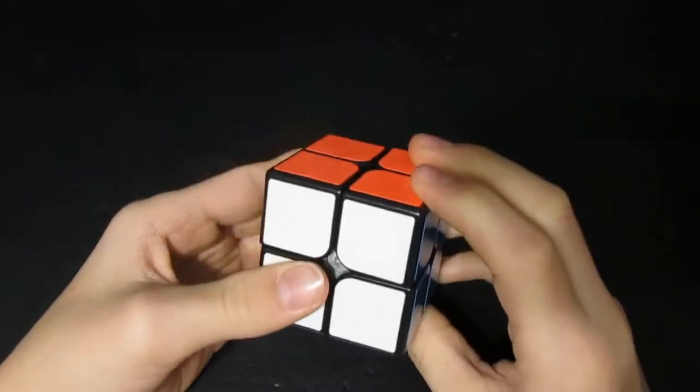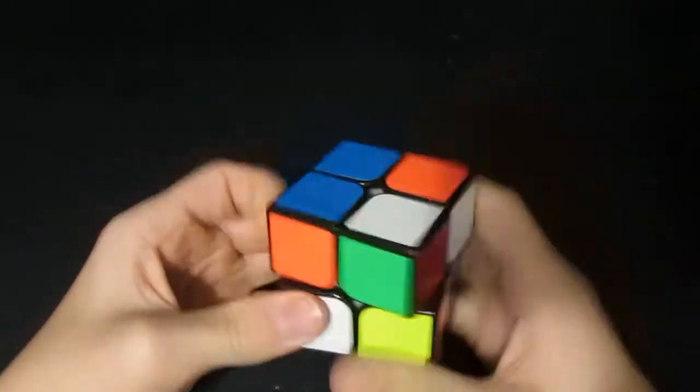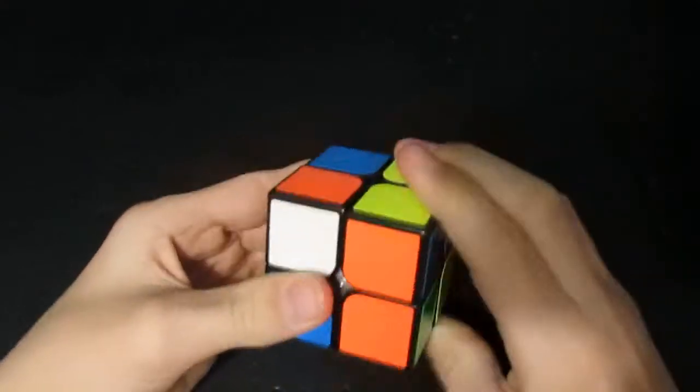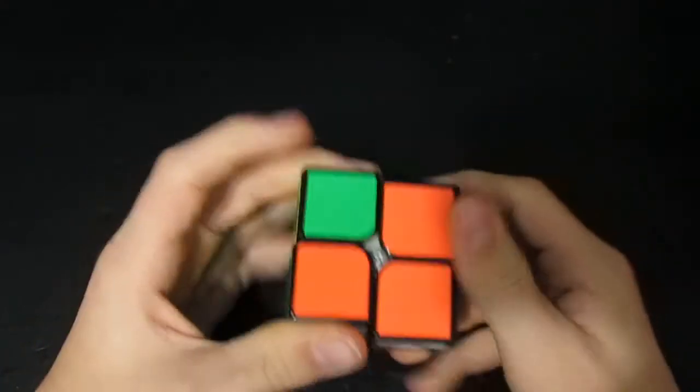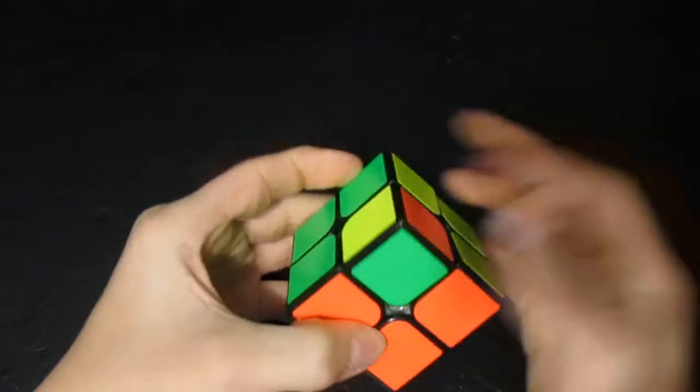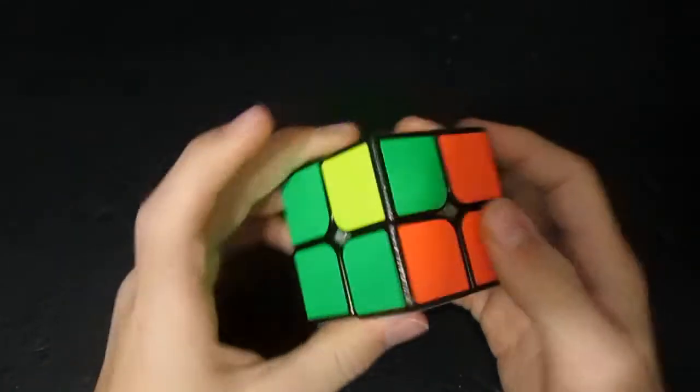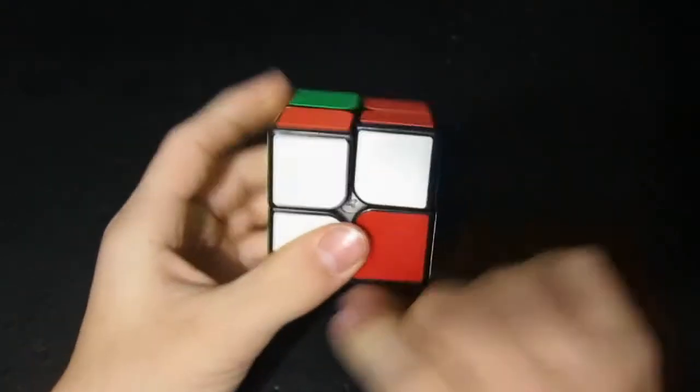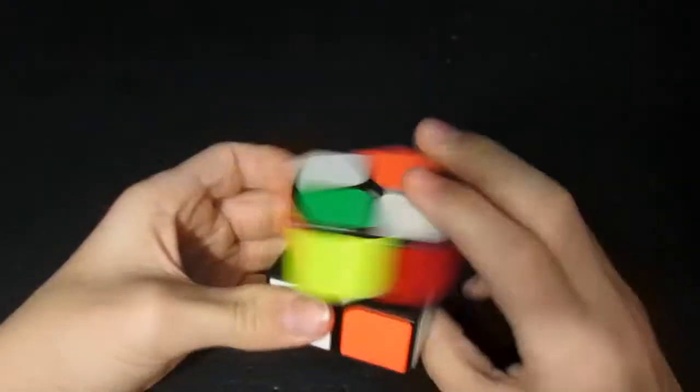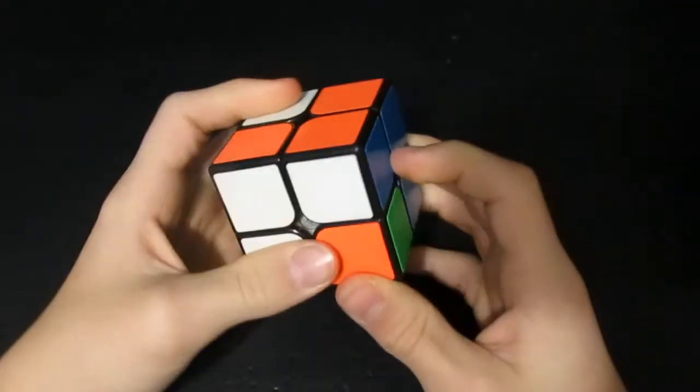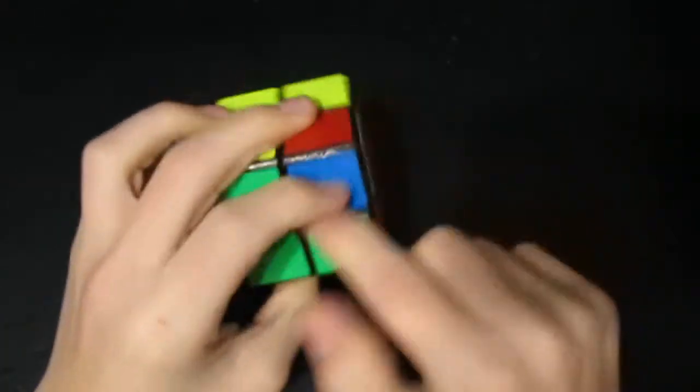But, what would happen if they're already in the spot but they're not orientated correctly? Well, what you do is just swap these, so they're not in their correct place, and then solve it from there.